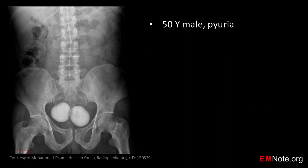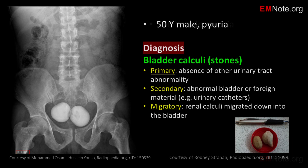This 50-year-old male presents with pyuria and dysuria. The diagnosis is bladder calculi or bladder stones. Bladder stones can be primary, secondary, or migratory. Primary stones occur in the absence of other urinary tract abnormality. Secondary stones are associated with abnormal bladder or foreign material such as urinary catheters. Migratory stones are renal calculi that have migrated down into the bladder.